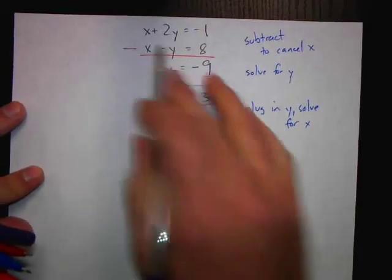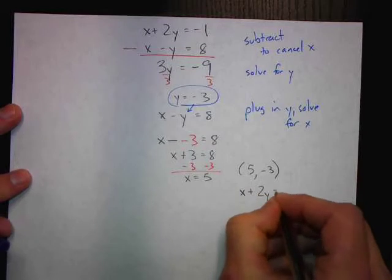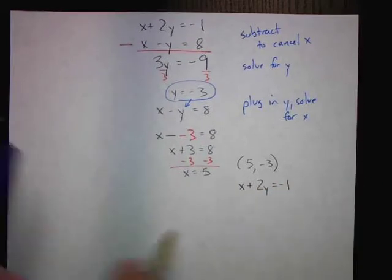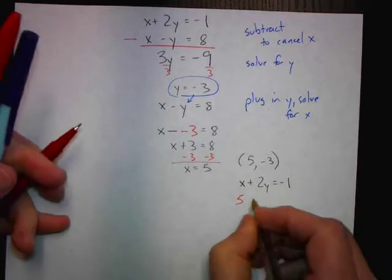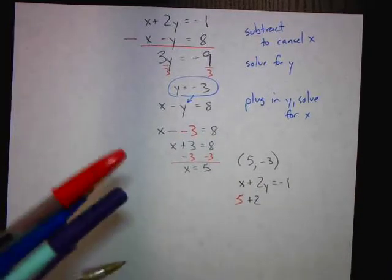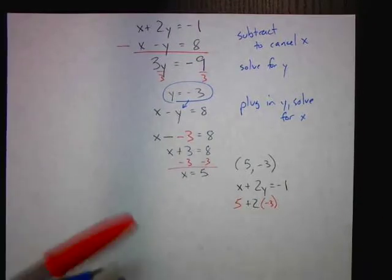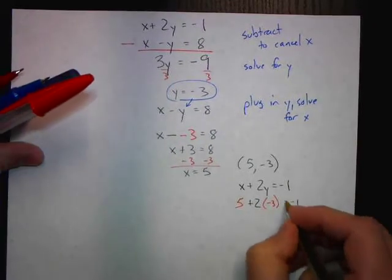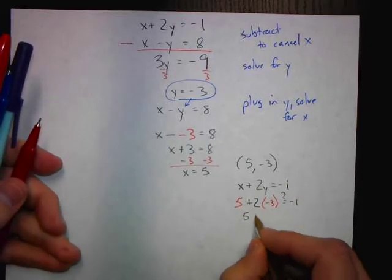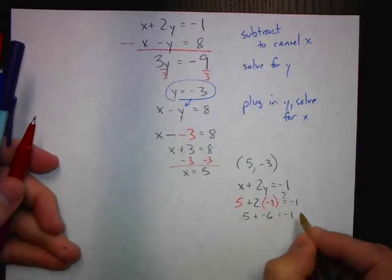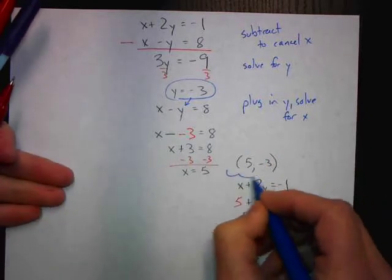Before I get too happy with that, I'm going to plug it into the first equation to check. My x is 5, my y is negative 3 — does that equal negative 1? So 5 plus negative 6 — does that equal negative 1? Absolutely, we're good to go. So this is the ordered pair solution of that second system.